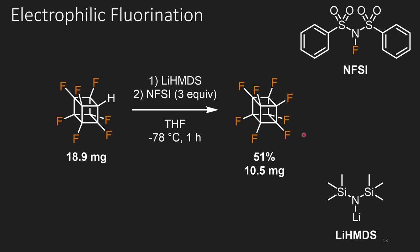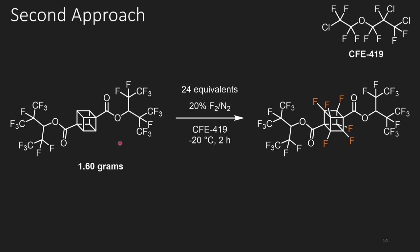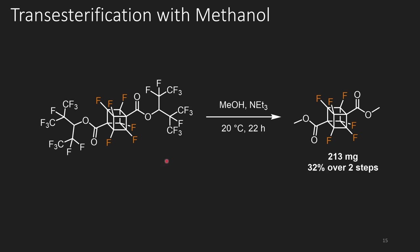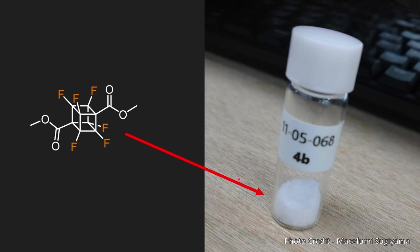The second approach utilizes the diester. They used essentially the same technique with the same number of equivalents of fluorine to get the hexafluorodiester species. Again, they don't isolate it — they transesterify, but in this case with methanol rather than benzyl alcohol. This is a quicker reaction, done in only 22 hours, giving them 213 milligrams in a 32% yield over two steps. We also have a picture of this diester species — it looks quite nice, though it also looks a little bit like sugar.